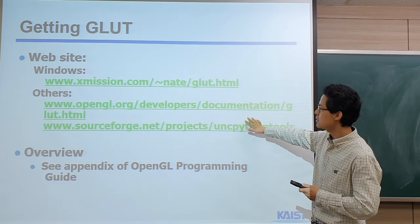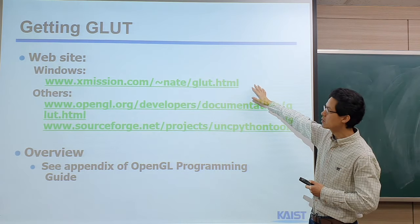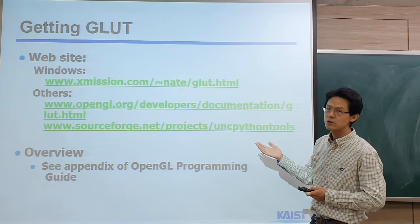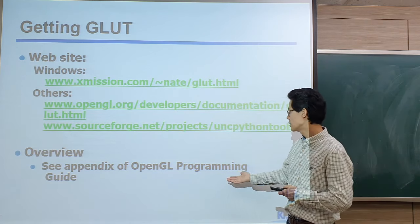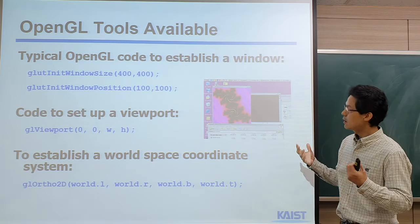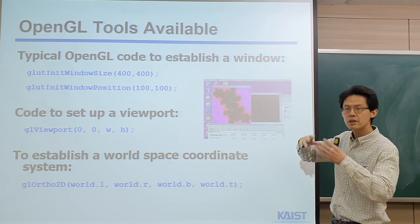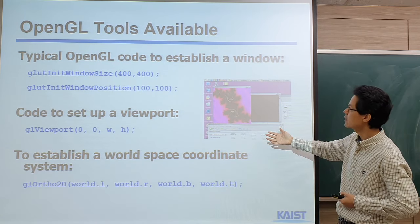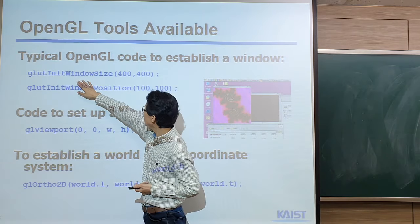You can download GLUT easily from Windows or other platforms. For the homework, we will mainly support Windows. If you Google GLUT or GLU library, there are a lot of references — even the OpenGL programming guidebook has sections on this. In the end, we want to create a sort of application window within the screen. We can do that by calling functions like GLUT InitWindowSize, setting our window size to 400 by 400 or similar width and height.